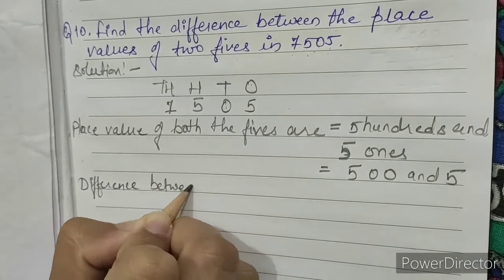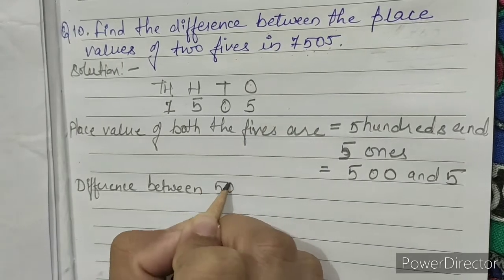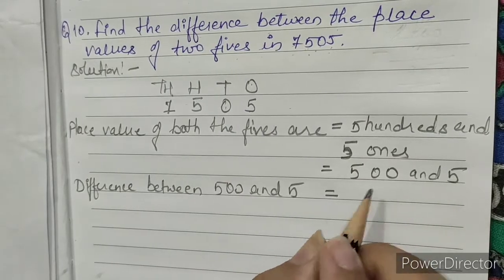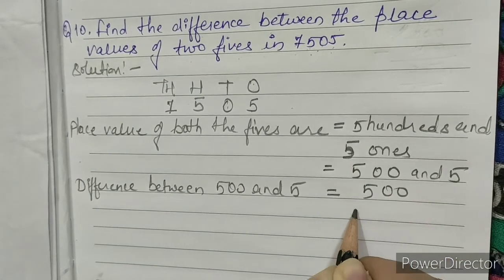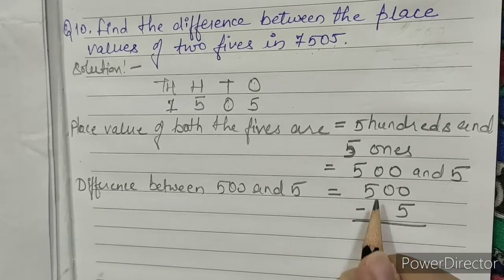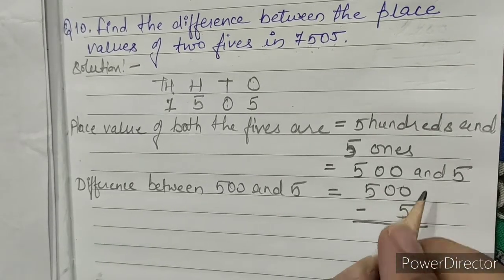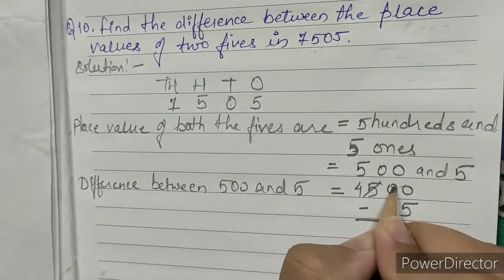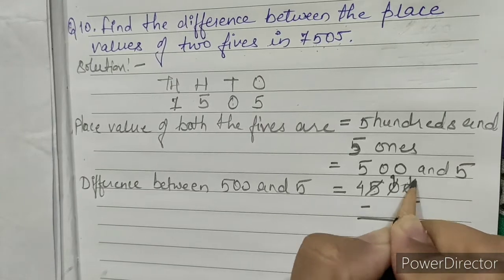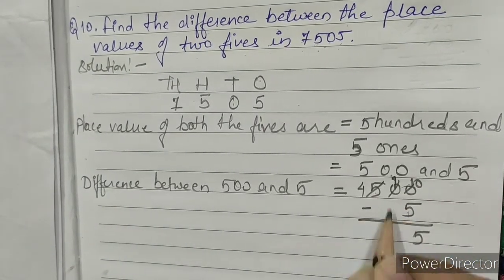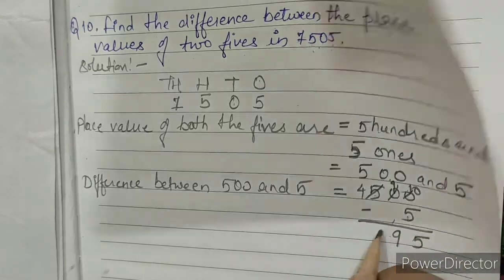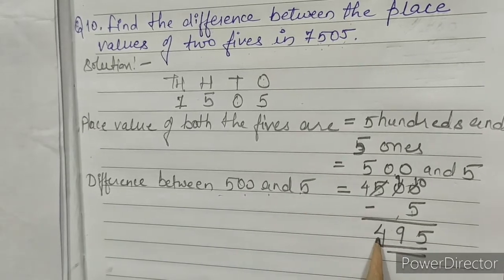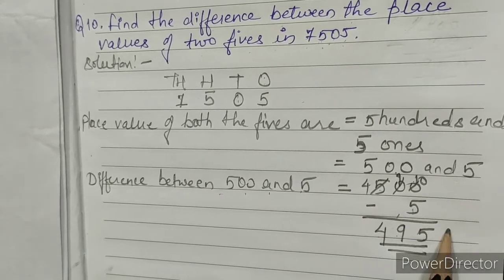Difference between 500 and 5 equals 500 minus 5. 0 minus 5 is not possible, so we have to borrow. This will become 4, this one is 9, and this one is 10. 10 minus 5 is 5, 9 we'll write as it is, and we'll write 4 as it is. So the difference between 500 and 5 is 495. This is our answer.